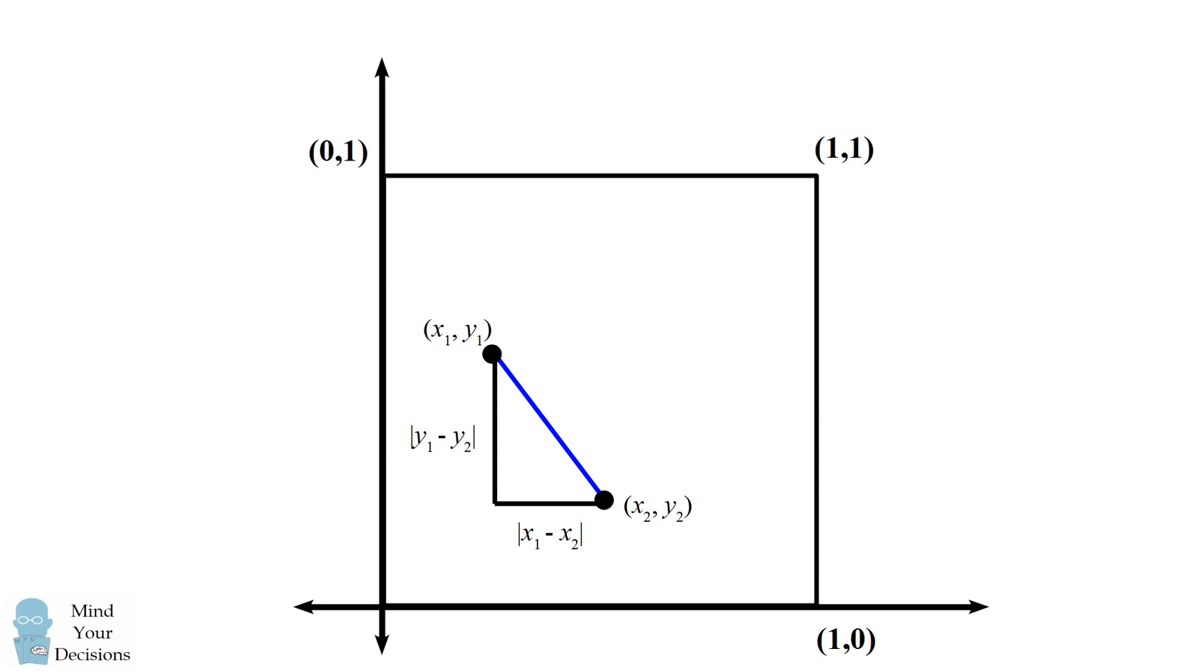We'll approach the problem analytically. We'll place the unit square in the Cartesian plane. We can give each of the two points an x and a y coordinate. To figure out the distance between the two points, we consider the difference of the x-coordinates and the difference of the y-coordinates. These are the distances of the legs of a right triangle. Therefore, we can use the Pythagorean theorem and come up with the distance formula for the distance between the two points. This will be the square root of the sum of the square differences between the x and the y-coordinates.